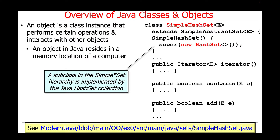We'll take a look at the case study EX0 throughout this discussion to provide some context. For example, here's an implementation of the SimpleHashSet subclass in the SimpleSet hierarchy, and you can see how it's implemented using the JavaHashSet collection. An instance of JavaHashSet is passed to the constructor of SimpleAbstractSet, and it's used by the SimpleHashSet implementation, as we'll see when we look at the code in more detail.